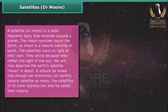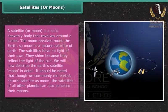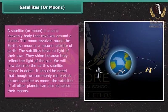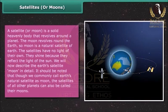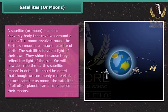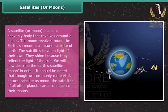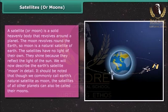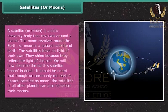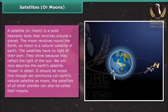The Moon is a solid heavenly body that revolves around a planet. The Moon revolves around the Earth, so Moon is a natural satellite of Earth. The satellites have no light of their own — they shine because they reflect the light of the Sun. Though we commonly call Earth's natural satellite the Moon, the satellites of all other planets can also be called their moons.